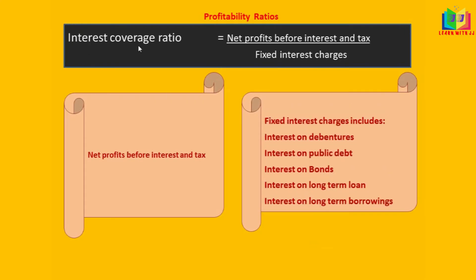The next ratio is interest coverage ratio. The formula is net profit before interest and tax divided by fixed interest charges. Fixed interest charges means the interest payable on debentures, public deposits, bonds, and interest payments on long-term debt or borrowings — the total of all interest payments is the fixed interest charges.